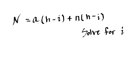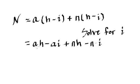All right. So what we're going to do here is I'm going to distribute the a across and then distribute the n across. So this becomes a times h minus a times i plus n times h minus n times i. And of course, that's equal to N.